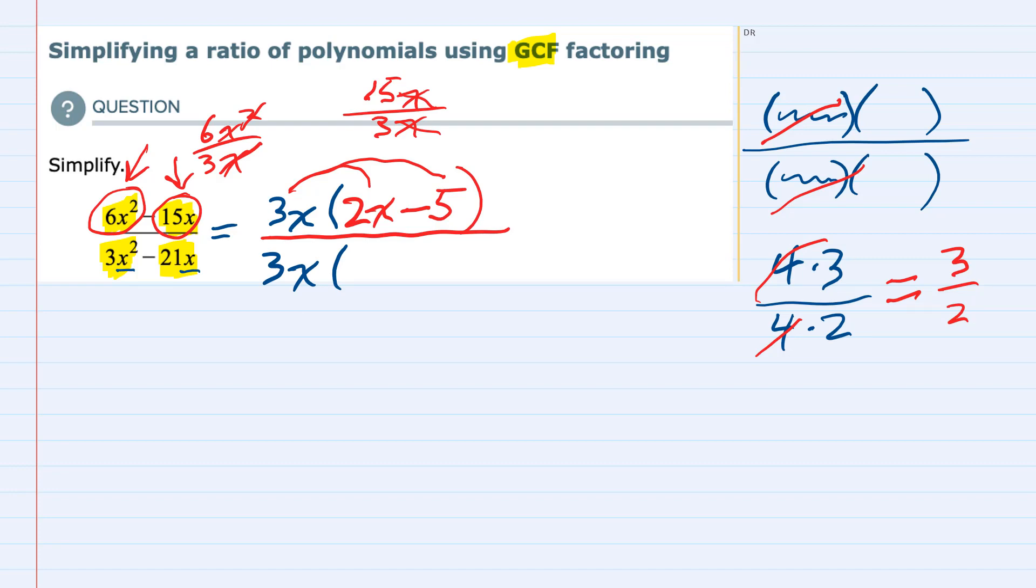So if I take this first term 3x squared and I divide that by 3x, the 3s are going to cancel. This x cancels one of the x's in the numerator and I just have x left. And if I check this, 3x times x gives me the 3x squared.